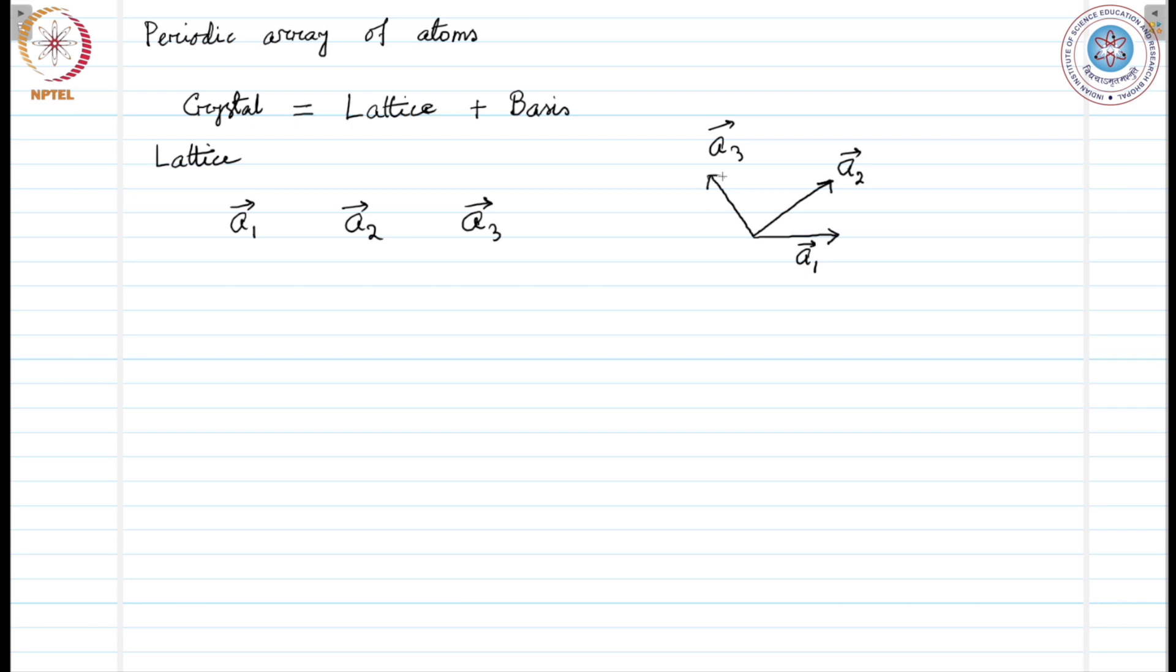So the arrangement of atoms at a vector, at a position, say R vector, that would be same as the arrangement of atoms somewhere else because we have infinitely periodic arrangement of atoms. So if we have R prime, that would be R, that is any point, that is the coordinate of any lattice point.